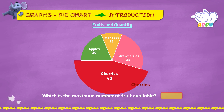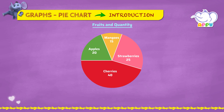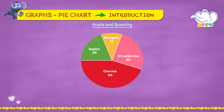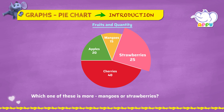So cherries is the maximum available fruit. Which is the least number of fruit available? We see that the smallest sector corresponds to mangoes, which is 15. So mangoes is the least available fruit. Which one of these is more — mangoes or strawberries? We can clearly see that the sector for strawberries is more compared to the sector of mangoes, so strawberries are more than mangoes.